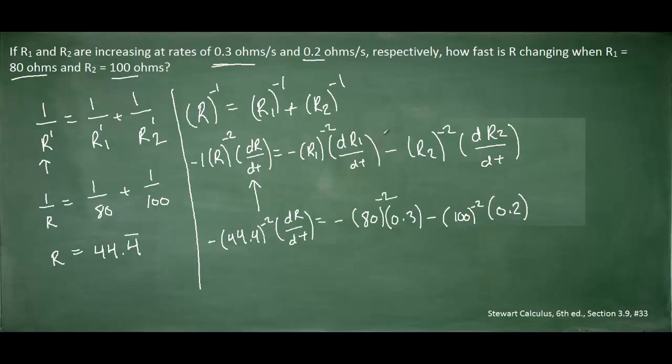A couple of things to note here. First of all, the rates at which R1 and R2 are changing are both positive. So we want to make sure that we include positive 0.3 and positive 0.2. And I also had forgotten to put in a power of negative 2 when differentiating the equation. So I put that back in here. Please take note of that. I've included it down here as well.